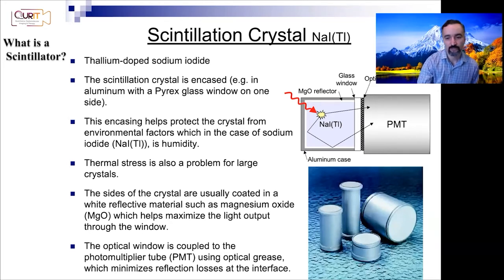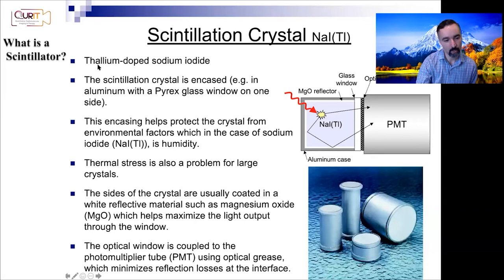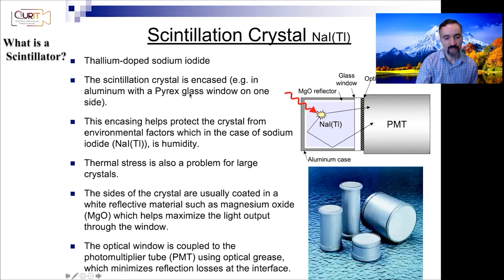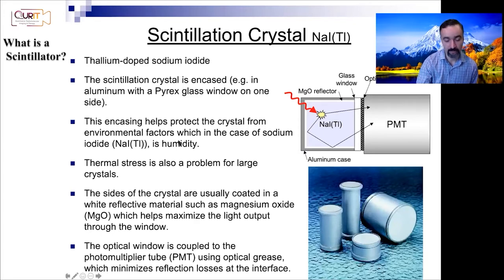Today we're going to talk about scintillation crystals. Historically there's been a lot of focus on sodium iodide doped with thallium, and we're going to talk about other scintillators too. You can see here that the scintillation crystal is encased, and the encasing helps protect it from environmental factors — in this case humidity. Thermal stress is also a problem for large crystals, and the sides are coated with reflective materials such as magnesium oxide.